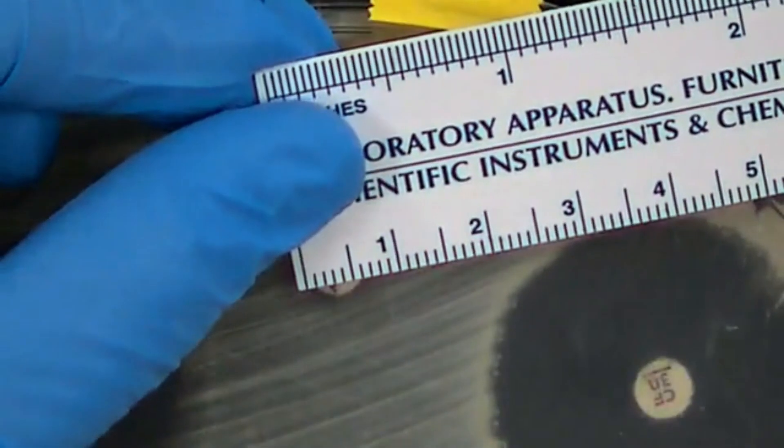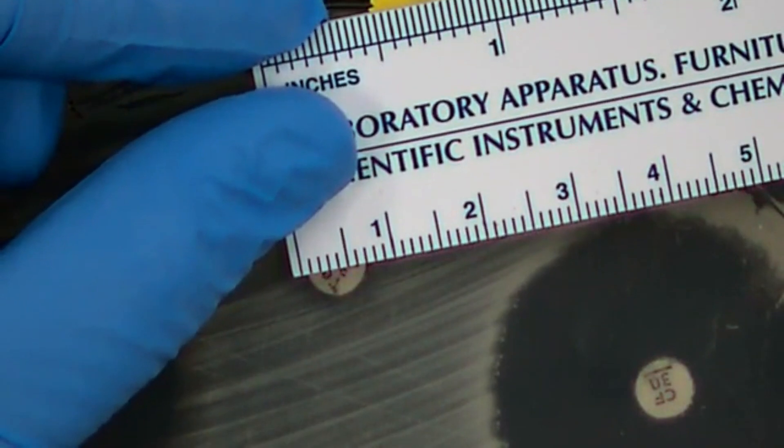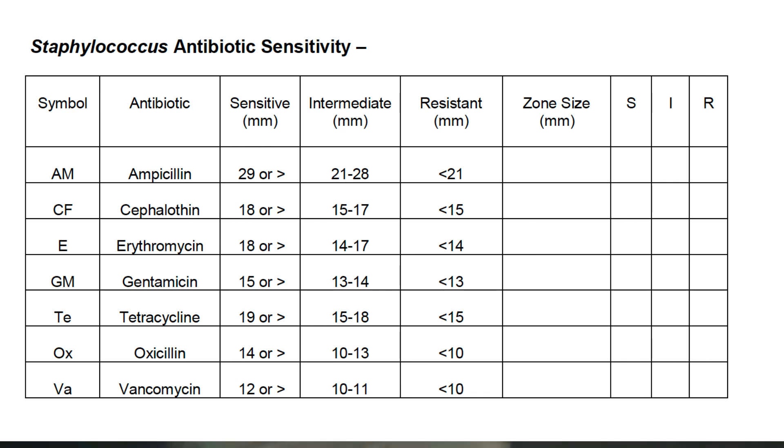Let's look at one more disc. This one is labeled TE for tetracycline, and it has a zone of inhibition of about 8 millimeters.